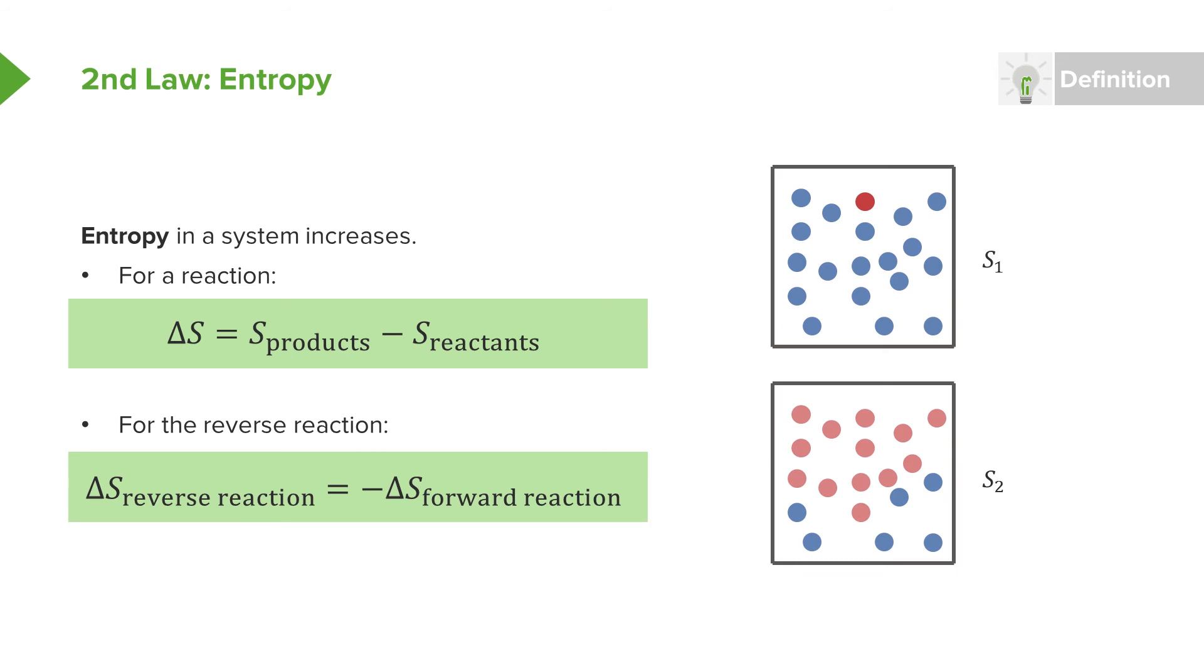If we reversed that reaction and had it going the other way, we would simply put a minus sign because we would simply have different reactants and products just from our definition. And so we would say that the entropy of the reversed reaction, or the change in entropy of your system for the reversed reaction, is simply the negative of the change in the entropy for the normal forward reaction.